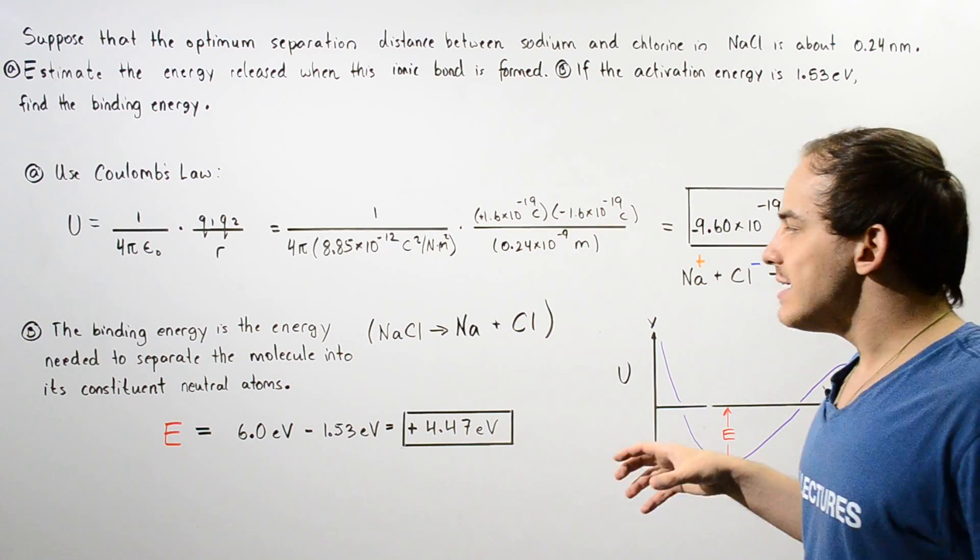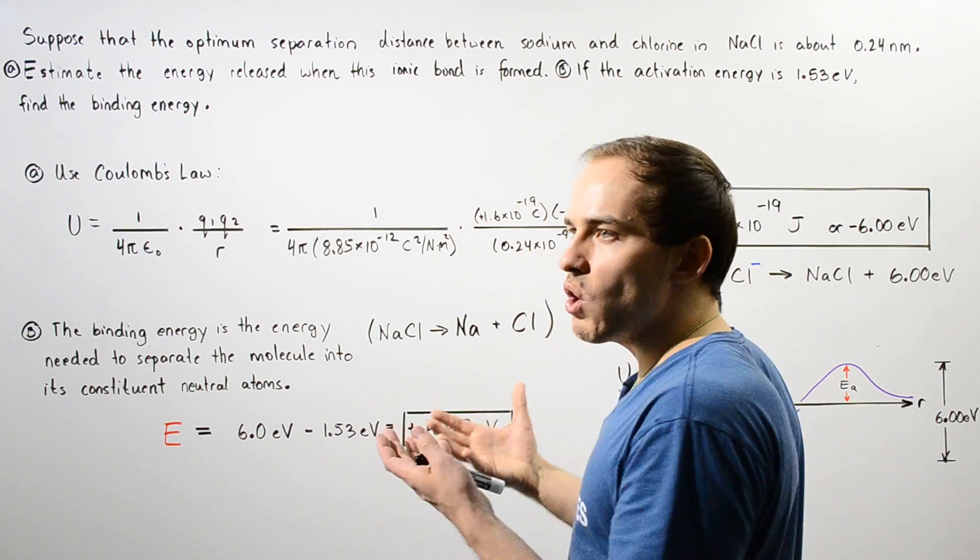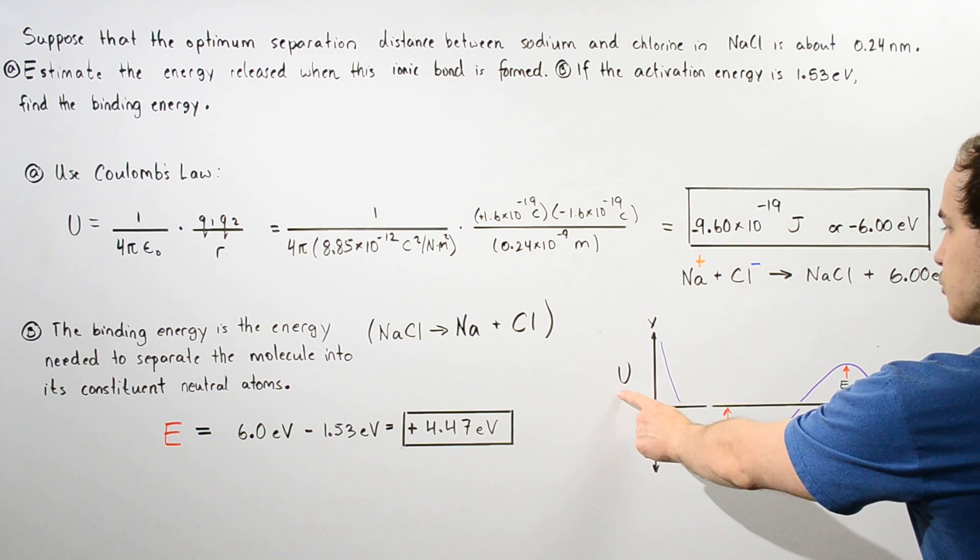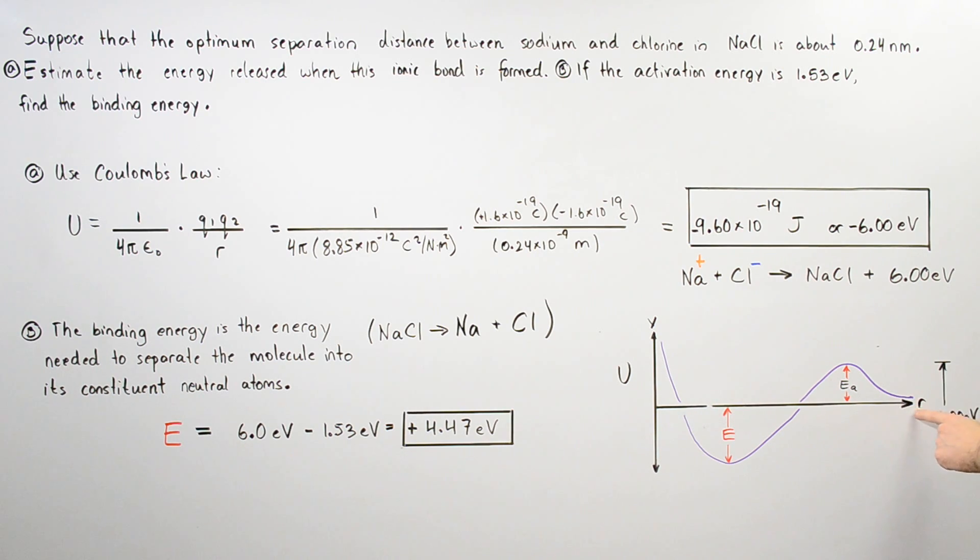To visualize how we're going to calculate the binding energy, let's take a look at the potential energy diagram for the formation of our sodium chloride. Our y-axis is the potential energy given by U, and the x-axis is the separation distance given by R.